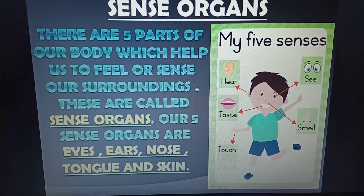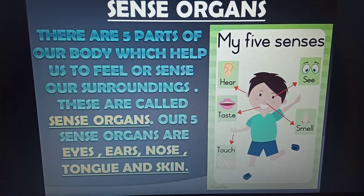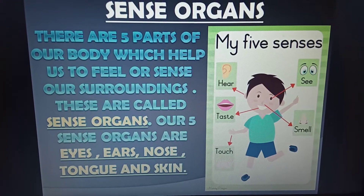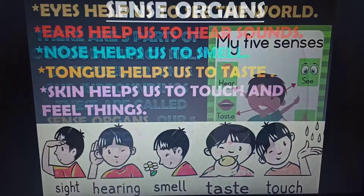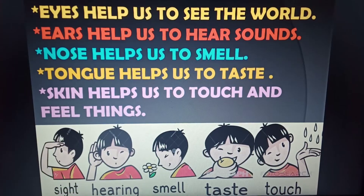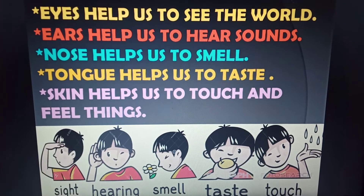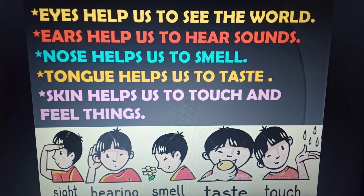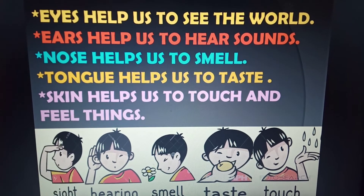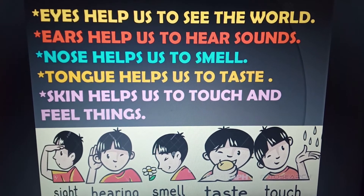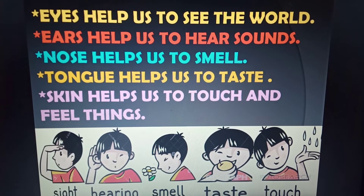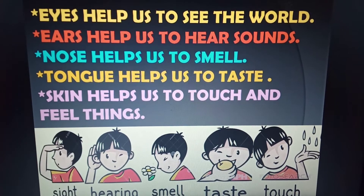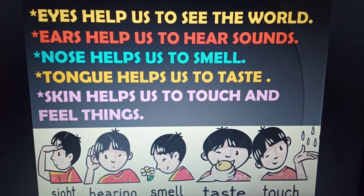The picture here depicts all the 5 sense organs. Eyes help us to see the world around us. Here in the first picture we can see the function of the eyes, i.e. sight.